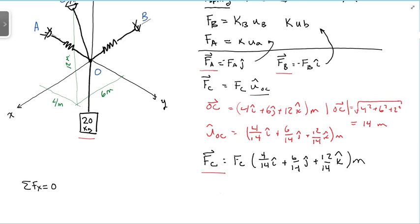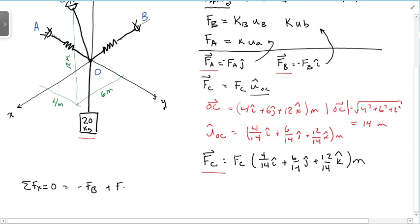So I have minus FB plus FC times 4/14 equals 0. Therefore, FB equals 4/14 of FC.